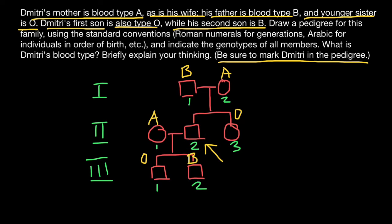We specify children from oldest to youngest, from left to right, just like we write. So oldest to youngest — but this does not mean that his wife is older than Dmitri. This convention is only true for the children. For example, within each couple, the left child is older than the right child. We know the blood types of all people here except Dmitri.